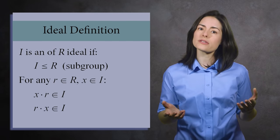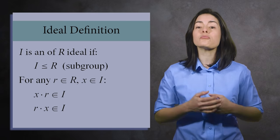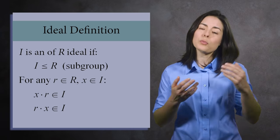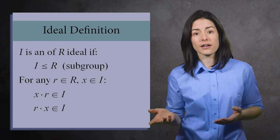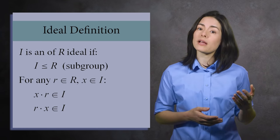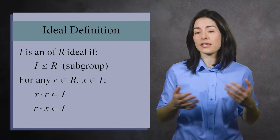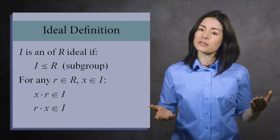These additional properties are a generalization of the concept of multiples. For example, if you multiply any integer by a multiple of five, you get another multiple of five. And with ideals, if you multiply an element in the ring by an element in the ideal, you get another element in the ideal.